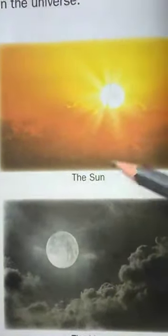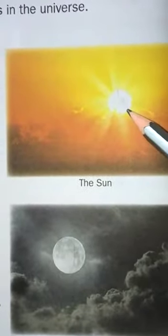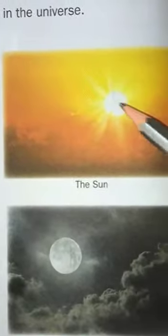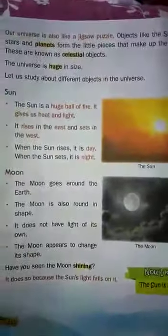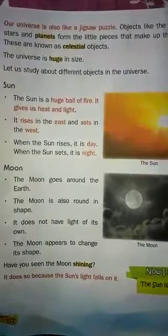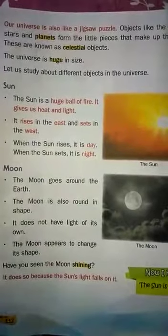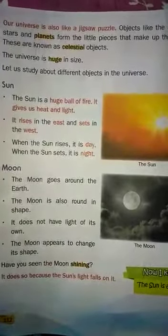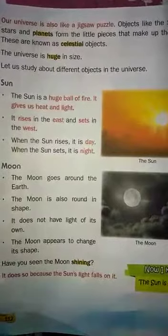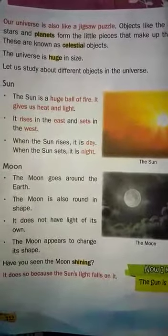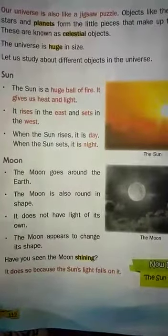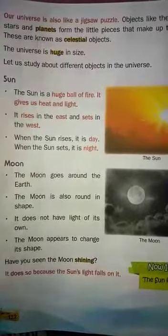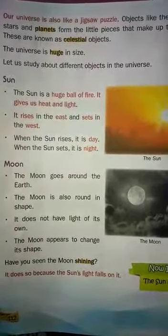Look at this picture. The sun — it's daytime because the sun is here. Sun is a huge ball of fire. It gives us heat and light. Sun rises in the east and sets in the west. When the sun rises it is day, and when the sun sets it is night.